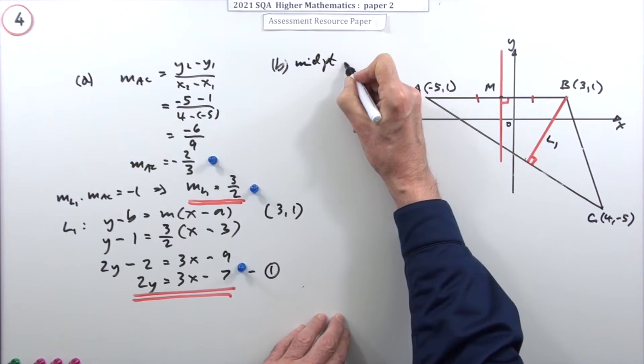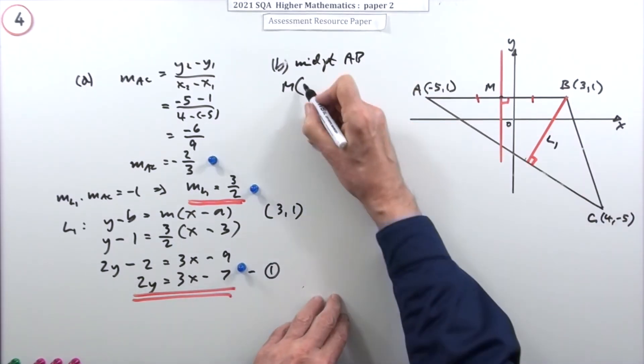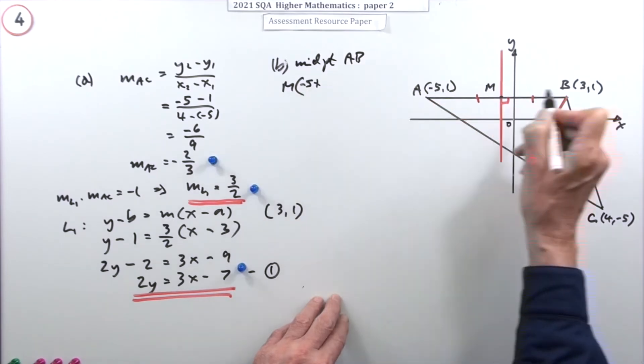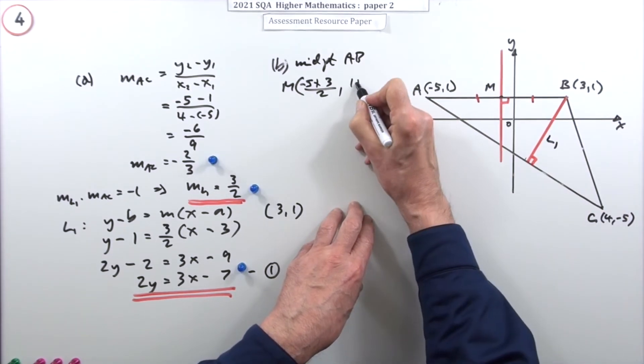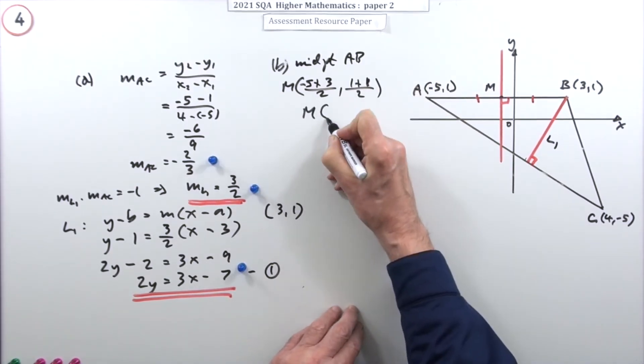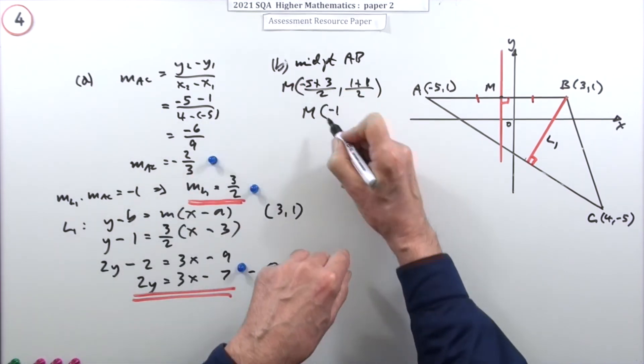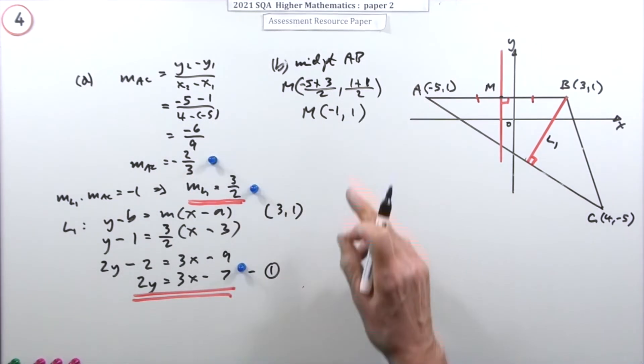But you have to find that first of all. What's the midpoint of AB? I'm going to call that M, so it's the average of the coordinates: (-5 + 3), so it's the average of the x's, which means the midpoint is the point (-1, 1) because that's -2/2 = -1 and that's 2/2 = 1. That gets a mark.